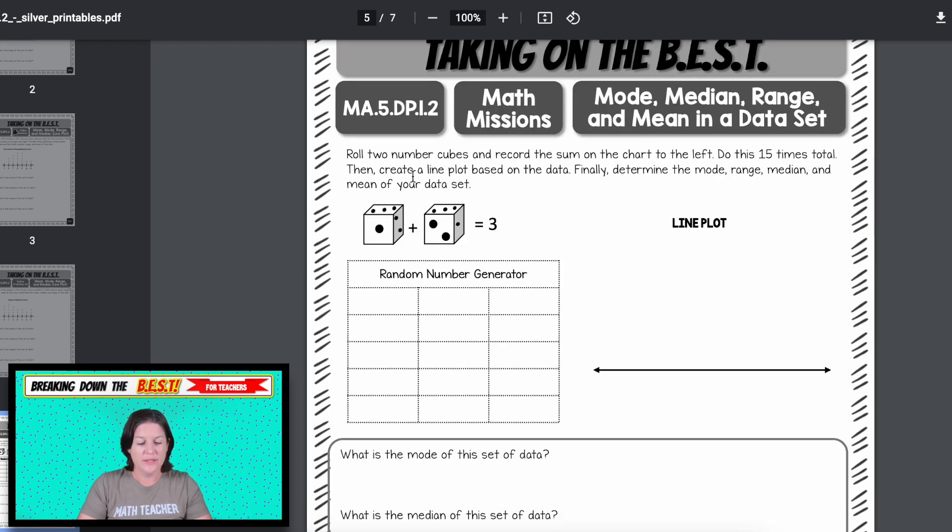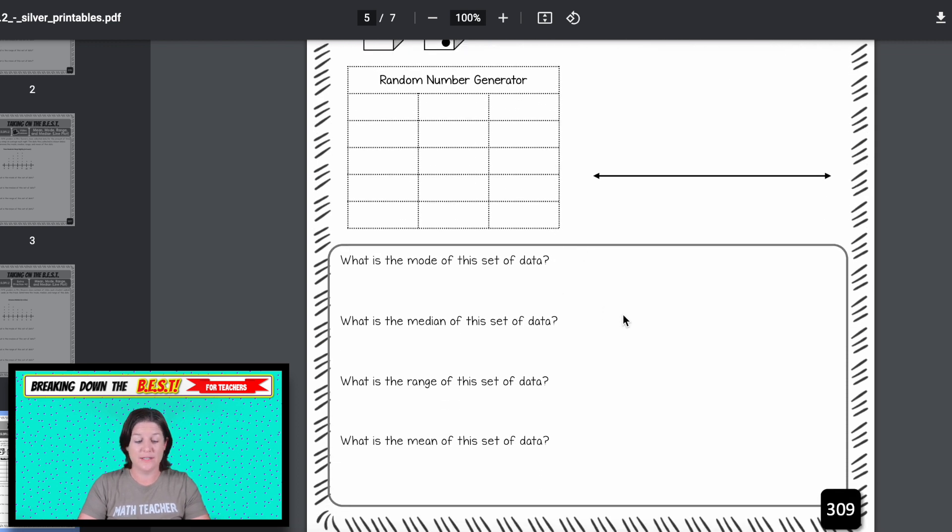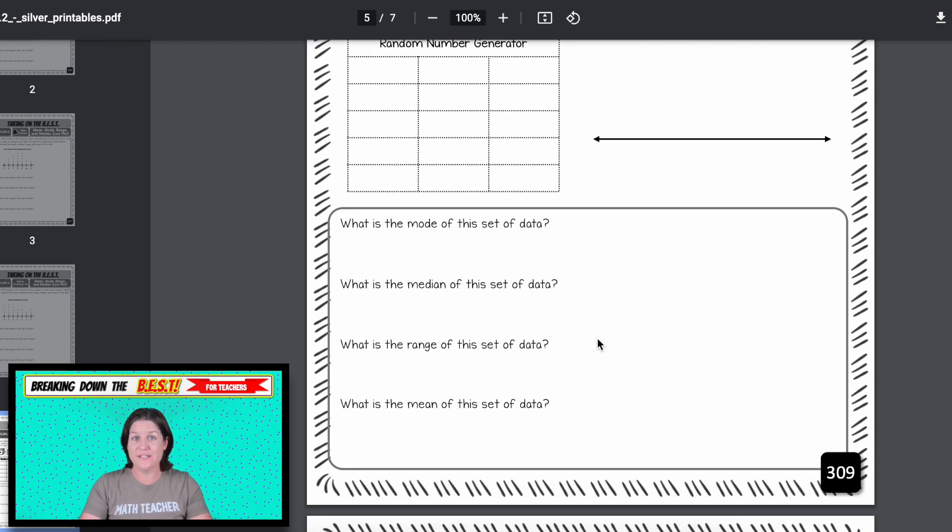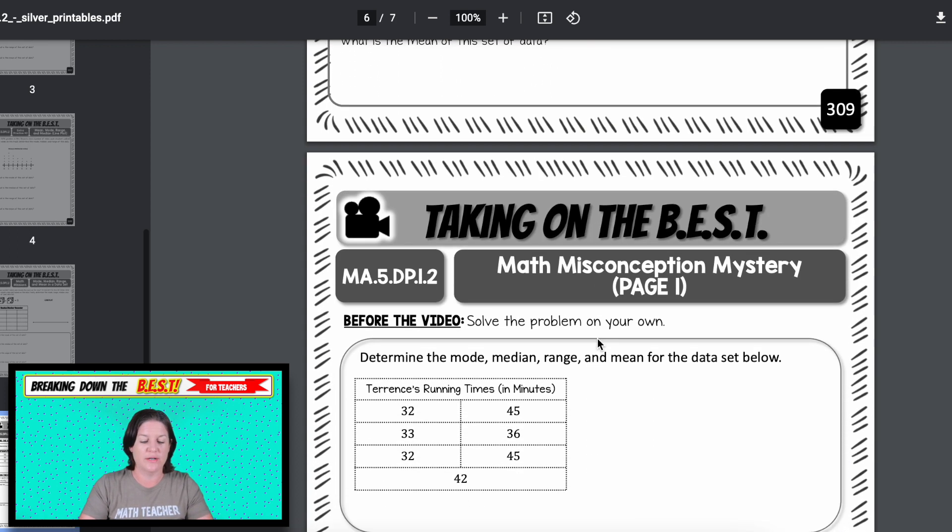Then we have the math mission right here. This says to roll two number cubes and record the sum on the chart to the left. Do this 15 times, then create a line plot based on the data. Finally, determine the mode, range, median, and mean. So if you roll a one, and you roll a two, you would add those up and get three. And you would, and then your students would go ahead and put these, their sums into this table, use the information from the table to create a line plot, and then find the mode, the median, the range, and the mean of the data that they collected. So this is nailing the standard right there.